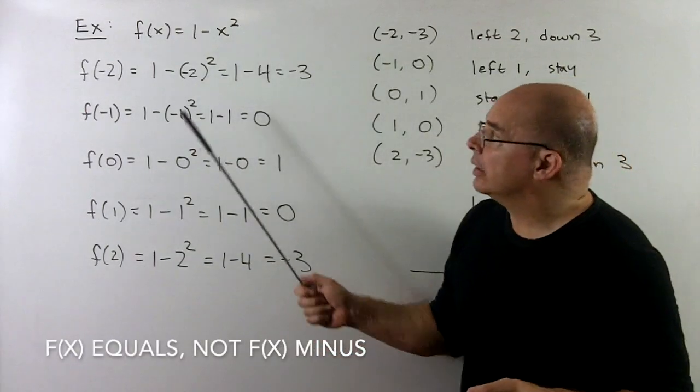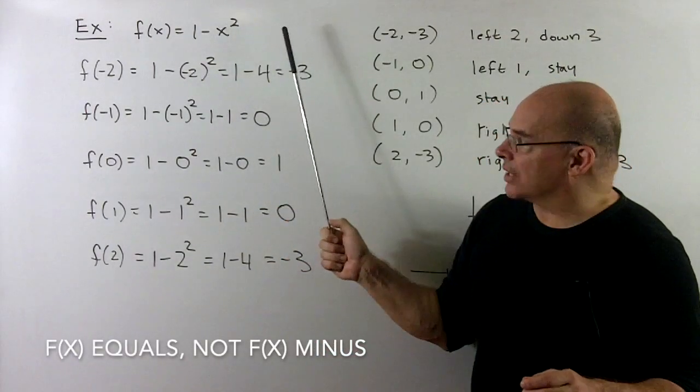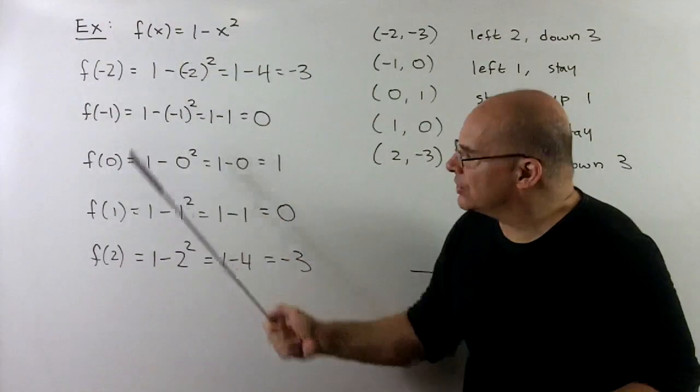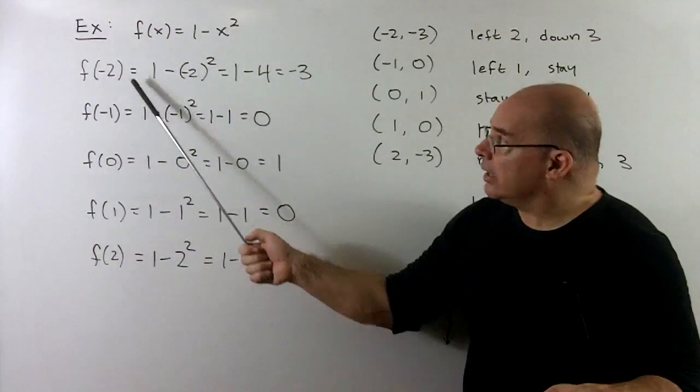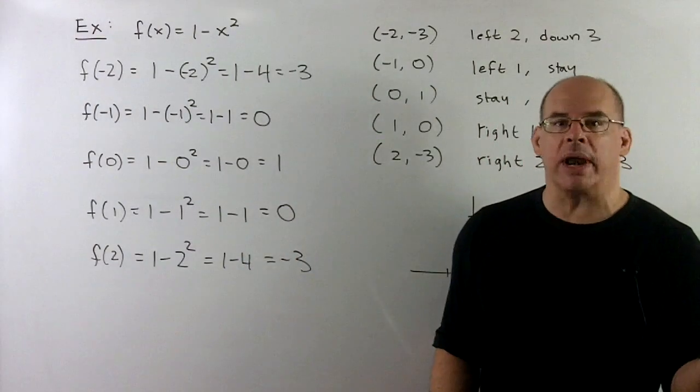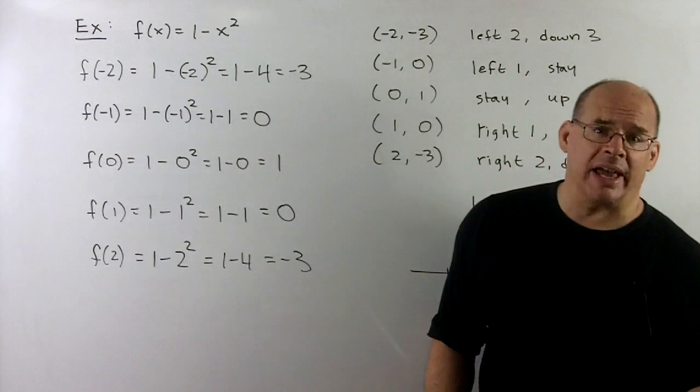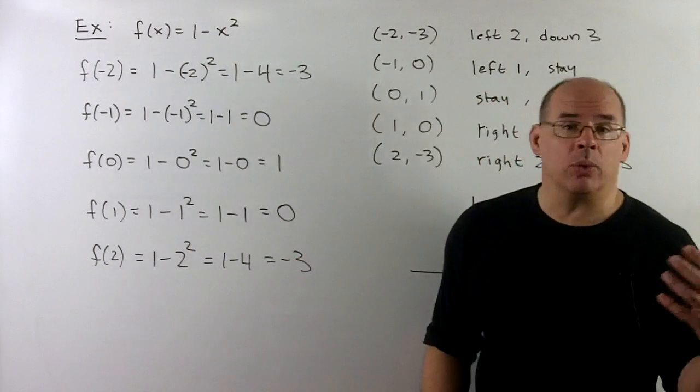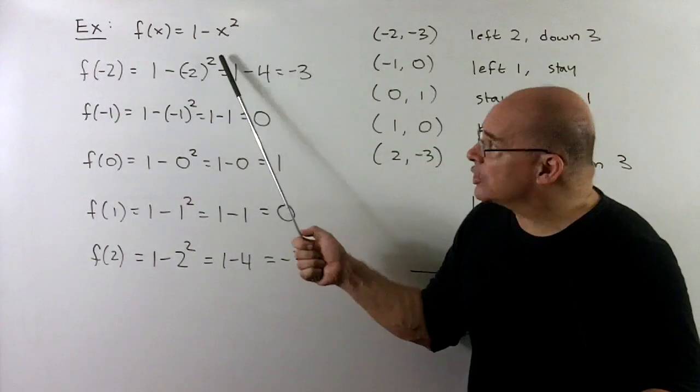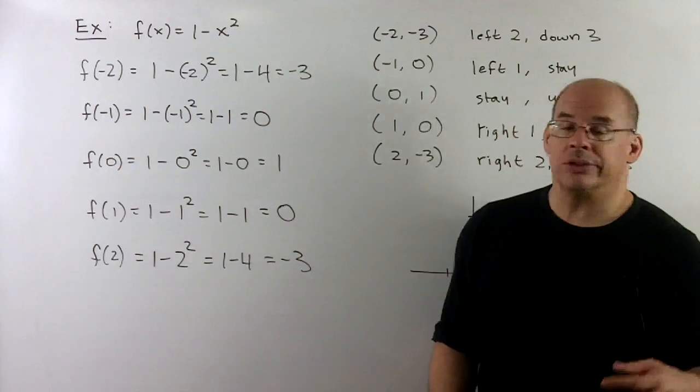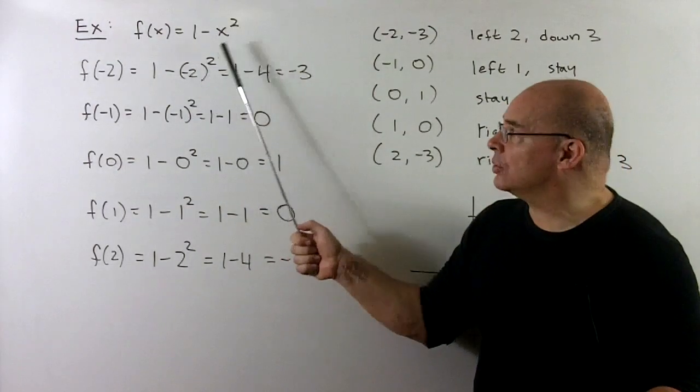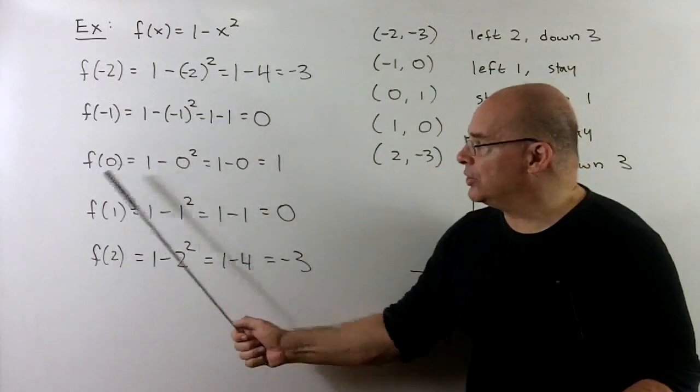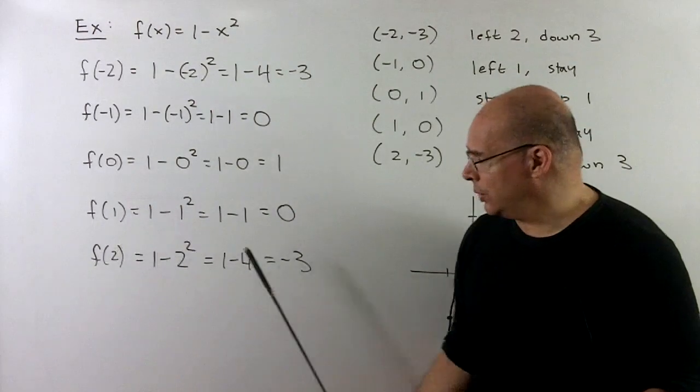Let's try another example. We'll use f(x) equal to 1 minus x squared. We'll need a little bit more detail here to get the shape, so I'm going to go from minus 2 to 2. We put our numbers in, so f(minus 2). Remember, when I substitute minus 2 in, if I have a negative, I put it in parentheses, so that way I don't lose signs. Then, remember with PEMDAS, we're going to do the exponent before we do the subtraction. We'll have 1 minus minus 2 squared, that's 1 minus 4 is minus 3. And likewise, minus 1 to 0, 0 to 1, 1 to 0, and 2 to minus 3.